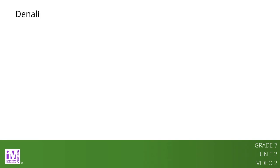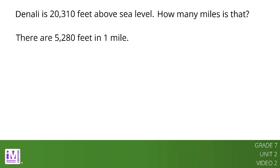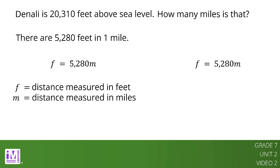For example, Denali is the highest mountain peak in North America. It is 20,310 feet above sea level. How many miles is that? There are 5,280 feet in one mile. This relationship can be represented by the equation f equals 5,280m, where f represents a distance measured in feet and m represents the same distance measured in miles.